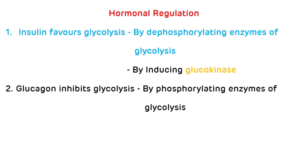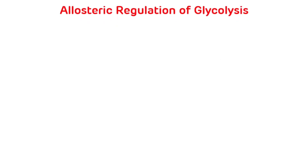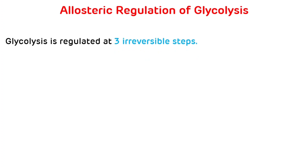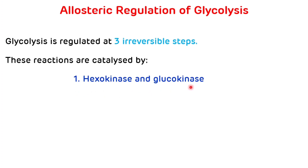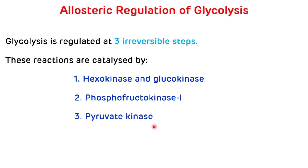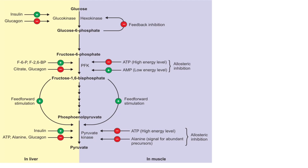Now we will see allosteric regulation. Glycolysis is regulated by three irreversible steps catalyzed by three main enzymes: first, hexokinase and glucokinase; second, phosphofructokinase-1; and third, pyruvate kinase. This is the picture showing allosteric regulation of glycolysis in the liver as well as in the muscle.